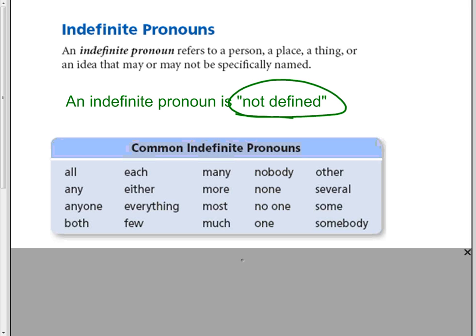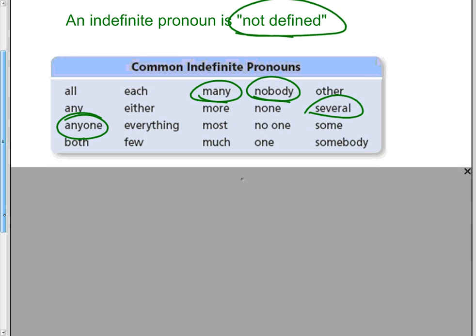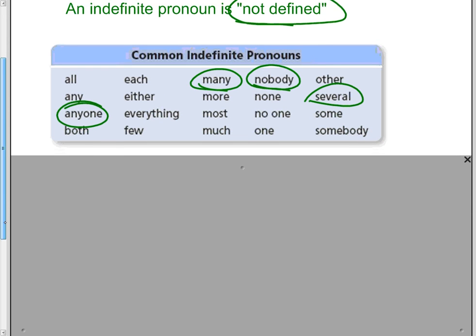Here are a few examples of why they're not defined. If I said 'anyone,' do we know exactly who anyone is? If I said 'many' — I have many M&Ms — do I know exactly how many 'many' is? 'Nobody' — I don't know exactly who nobody is. 'Several.' They're just undefined, not exactly defined. That's why they're called indefinite.